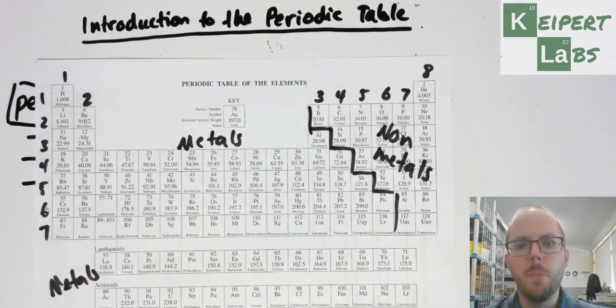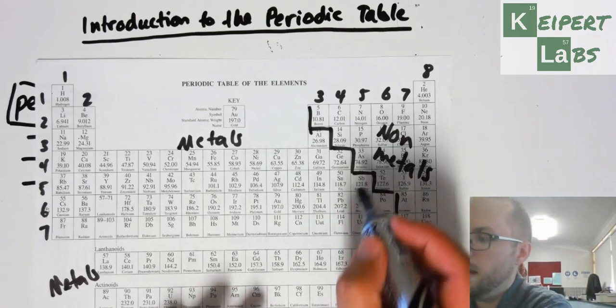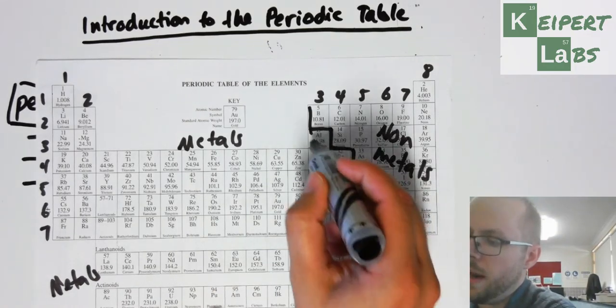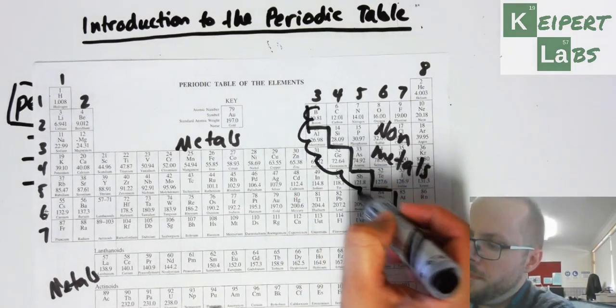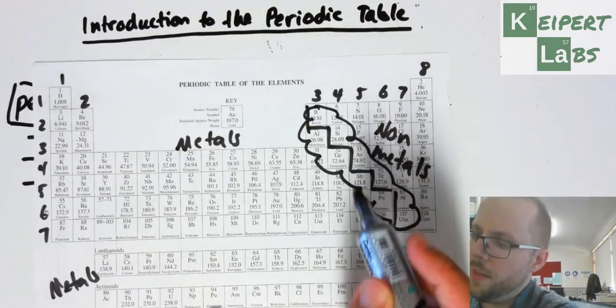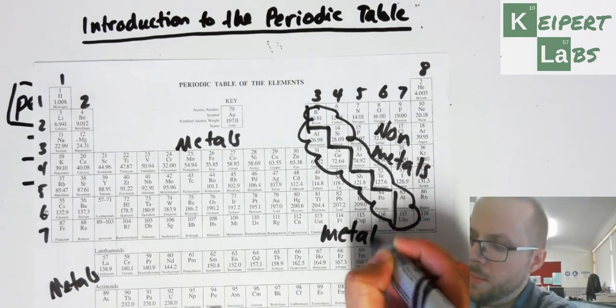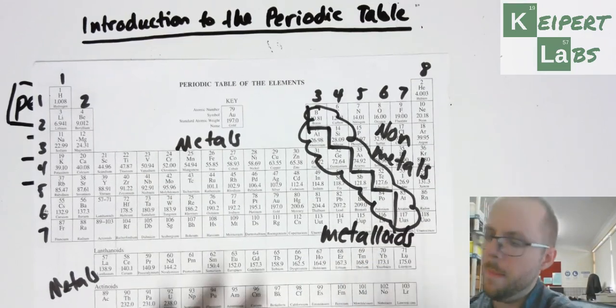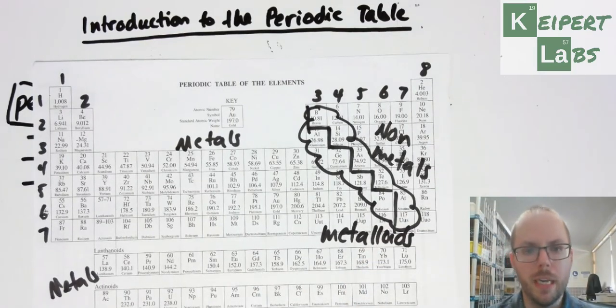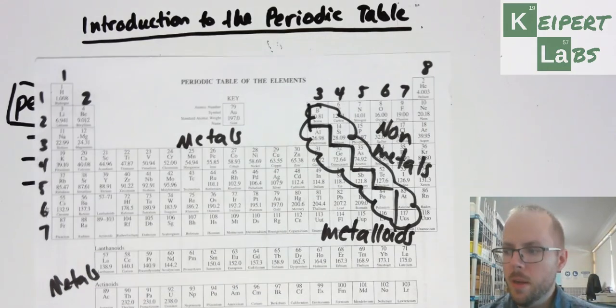But then also the ones that are on the border are sometimes - the things that are just on either side of this line we often refer to with the term that you might remember - we talk about metalloids or semi-metals. They're a little bit in between.